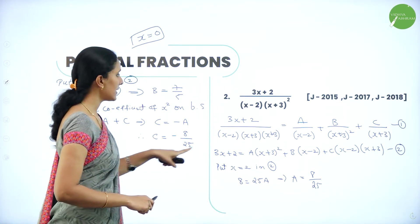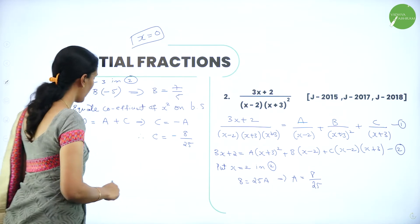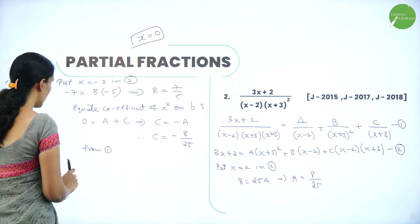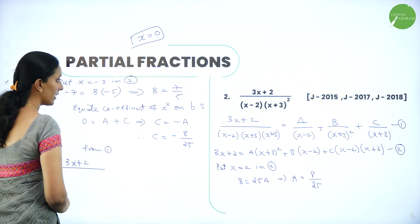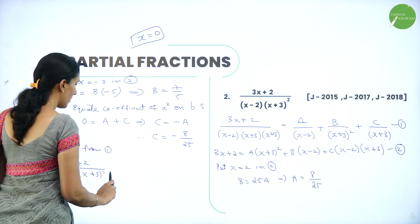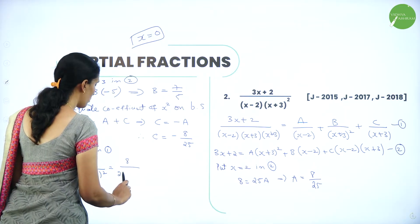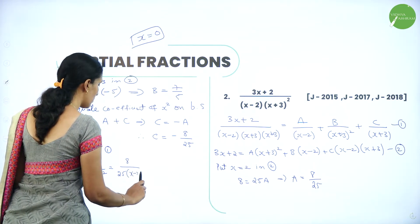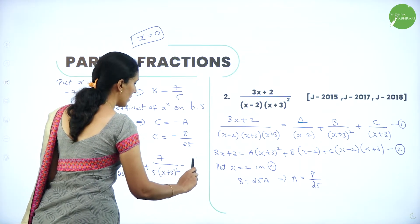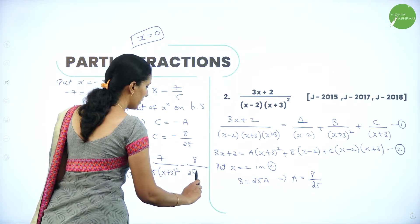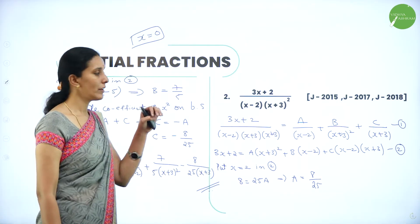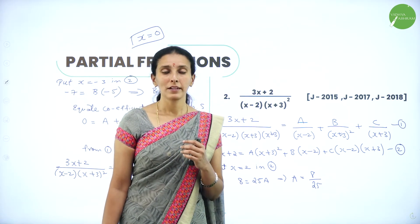Now we have the values of A, B, and C. Substituting in equation 1: (3x+2) divided by (x−2)(x+3)² = 8/[25(x−2)] + 7/[5(x+3)²] − 8/[25(x+3)]. Hence we have resolved the given rational function into simple partial fractions.